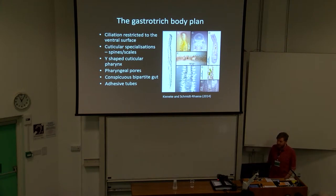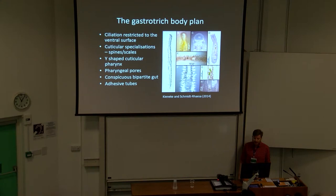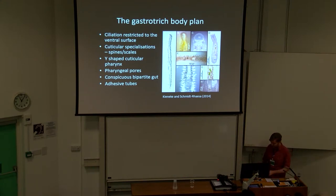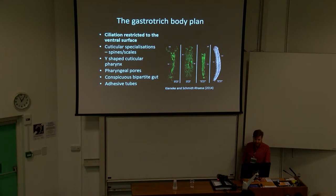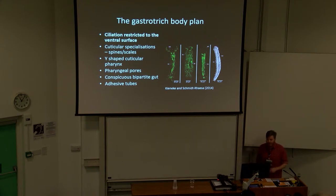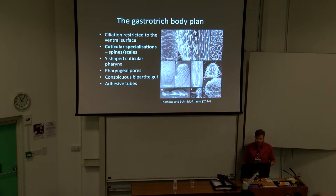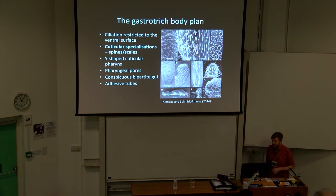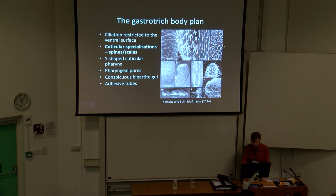Gastrotricha have a very interesting body plan. They're worm-like, although this is highly variable — they can be strap-like and long, or shaped like a bowling pin. One of their key features is that ciliation is restricted to their ventral surface, which is what they use to move around. That's where the name gastrotricha comes from — because of their hairy bellies. They're also covered in cuticular specializations, like scales and spines, or branching structures called anchors.